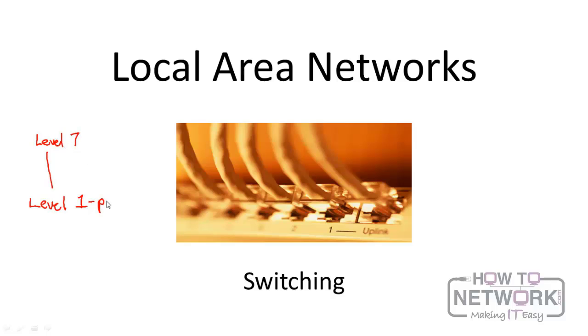Now level one was the physical layer, and on there we talked briefly about a device called a hub. Now the problem with the hub was whenever data went from one computer into the hub, the hub spouted all of that data out to all the other computers on the network.